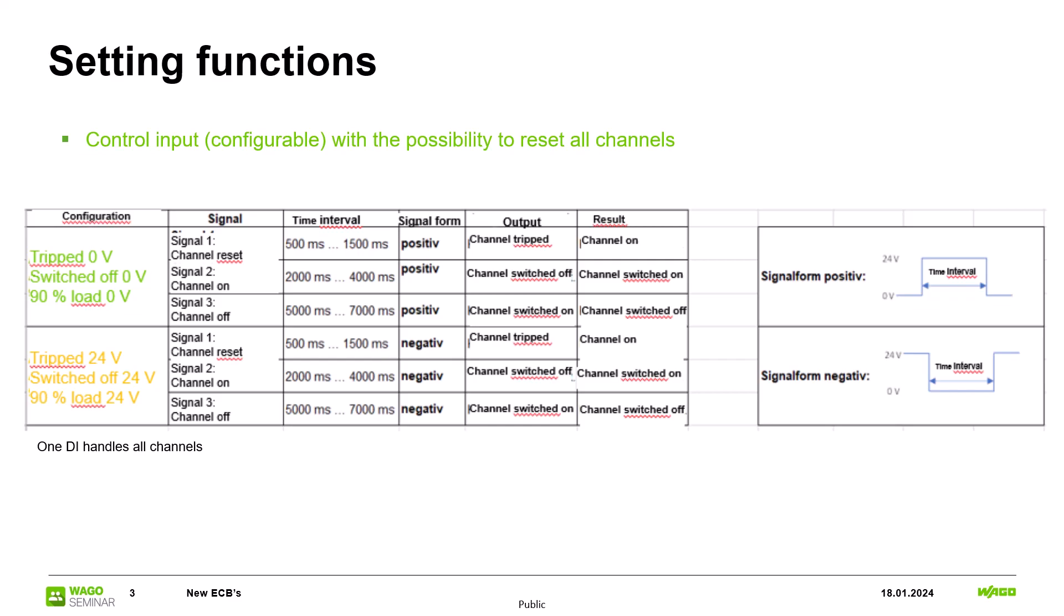The shape of this input signal depends on the signal output setting. The output switches from 24 to 0V as a factory setting. If you use this you need a 24V signal at the signal input. If you set the signal output change from 0 to 24V you need a 0V signal on the signal input.